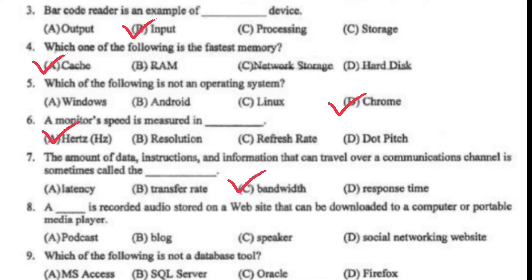The amount of data, instructions, and information that can travel over a communication channel is sometimes called bandwidth. A podcast is recorded audio stored on a website that can be downloaded to a computer or portable media player.